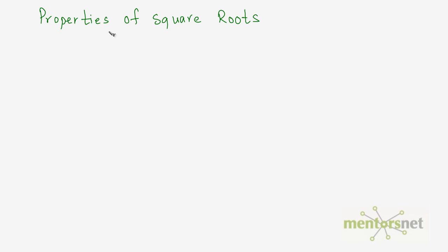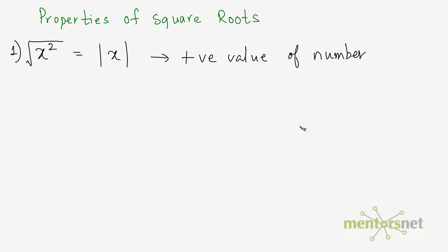With this, let us look at the various properties of square roots. The first property is: if you have a number x, you square it and take the square root of the square of x, you get the mod of x. That means if you take any number, you square it and take the under root of it, you will get the positive value of that number. For example, take the under root of minus 2 squared. We have minus 2, squared it, and took the under root of it — we get under root of 4, which is equal to 2.